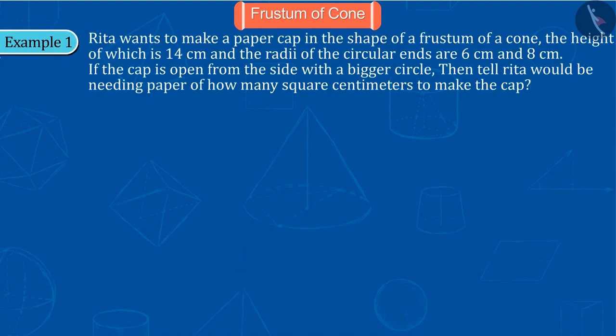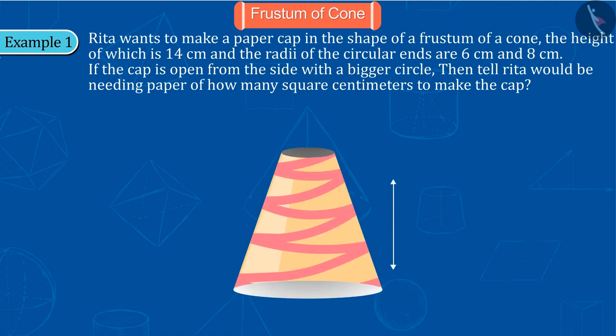Rita wants to make a paper cap in the shape of a frustum of a cone, the height of which is 14 centimeters and the radii of the circular ends are 6 centimeters and 8 centimeters. If the cap is open from the side with a bigger circle, then tell Rita would be needing paper of how many square centimeters to make the cap.